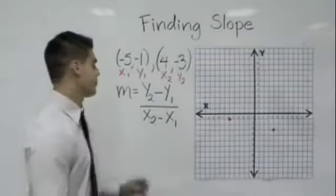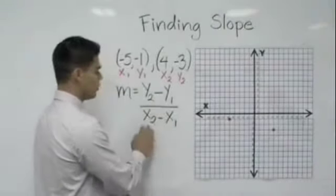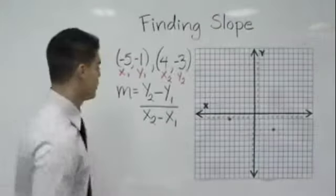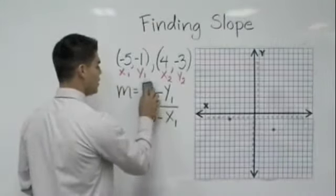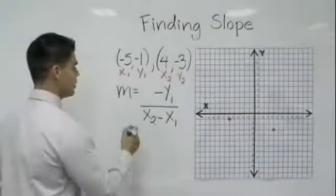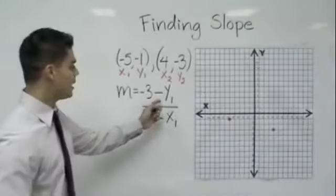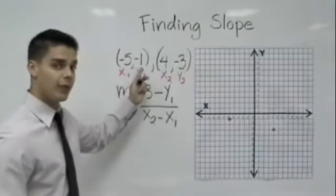So again before we continue remember memorize the slope formula. y2 minus y1 over x2 minus x1. So what is our y2? My y2 now is -3. So it's important that you bring the signs minus y1 which is a -1.